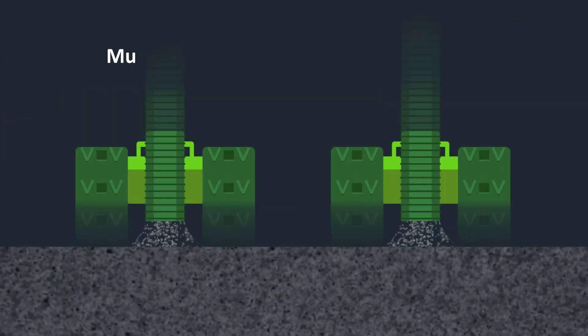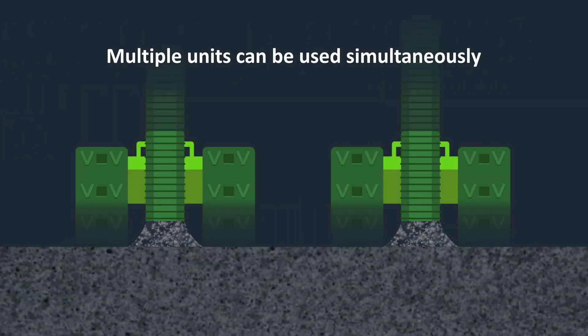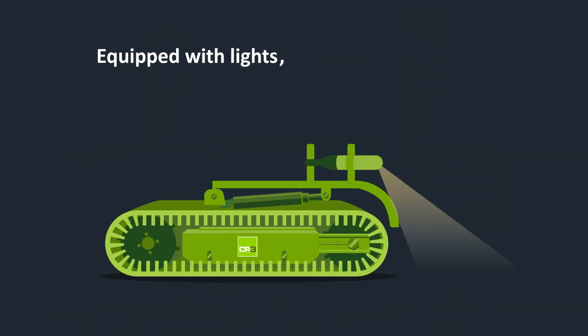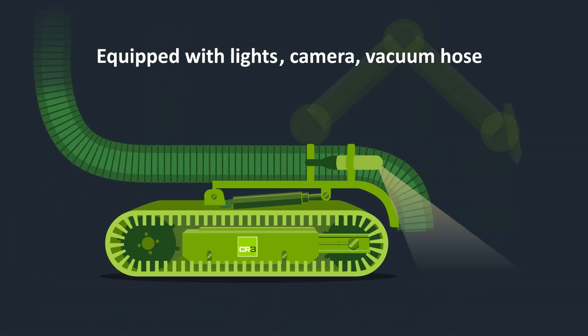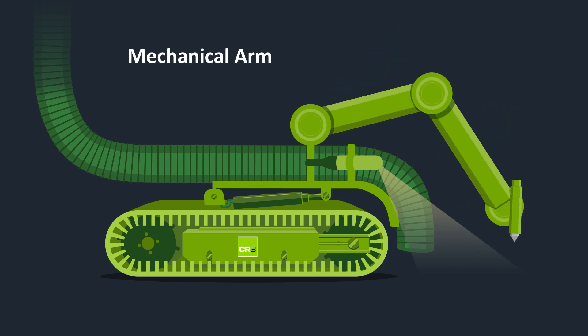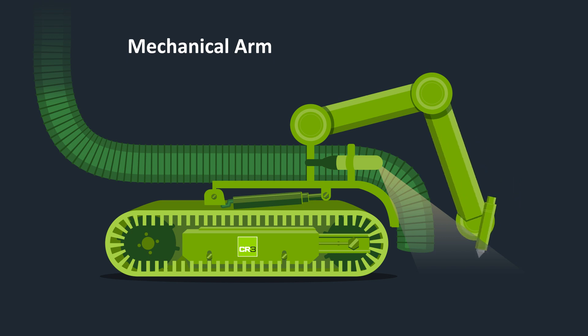For large reactors, multiple units can be used simultaneously to minimise schedules further. Rover is equipped with lights, camera and a vacuum hose. An additional mechanical arm can be customised with tools for specific applications, such as removing fused or coked catalysts.